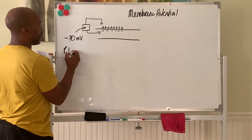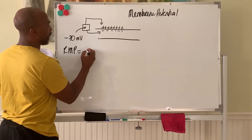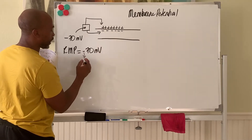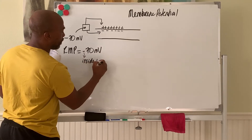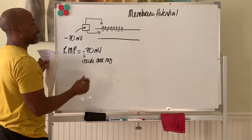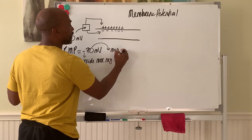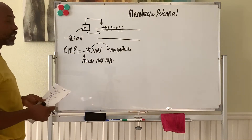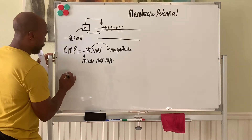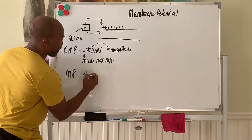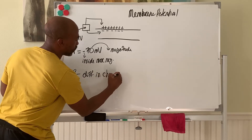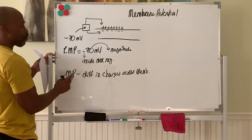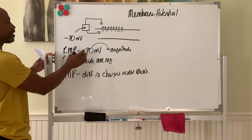We call this your resting membrane potential, equal to negative 70 millivolts. The negative sign indicates that the inside is more negative than the outside at that current spot. This is the magnitude — the size of the difference in charges across the membrane — and millivolts is the unit of charge. So the membrane potential is caused by a difference in charges across the membrane, and this value at rest is called your RMP, resting membrane potential: negative 70 millivolts.